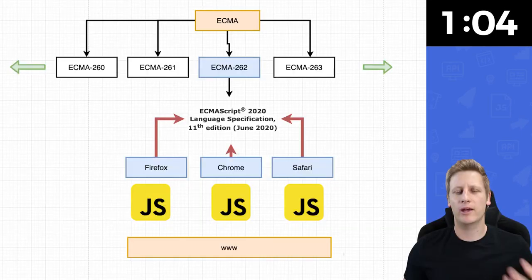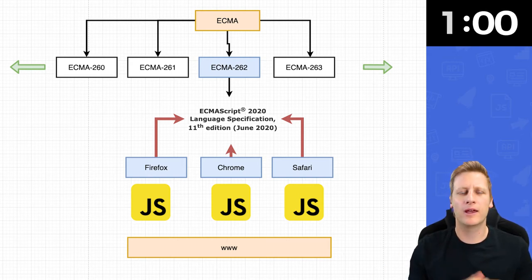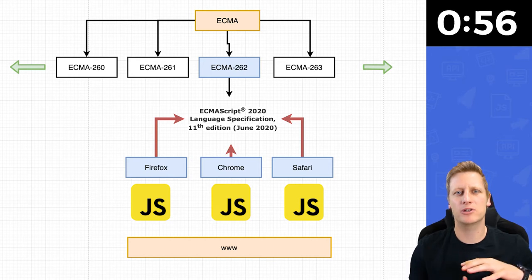The ECMA 262, or ECMAScript standard, is the standard to which the JavaScript programming language conforms. This means that JavaScript is not a programming language like Python or C++ where you can simply download a packaged version. Instead, organizations build software like a JavaScript engine for a web browser, and that engine executes the JavaScript. Firefox, Chrome, and Internet Explorer all have their own JavaScript engine built in.